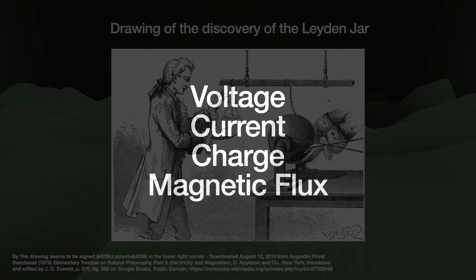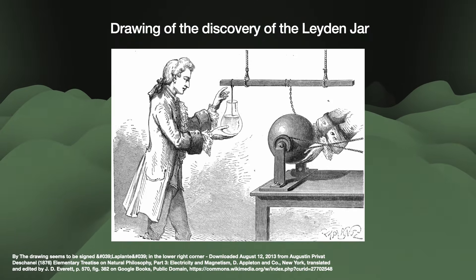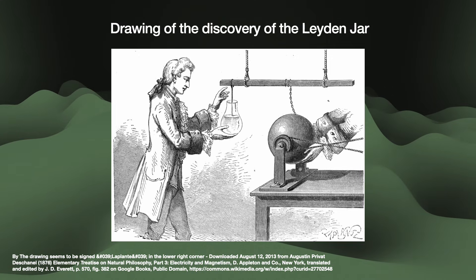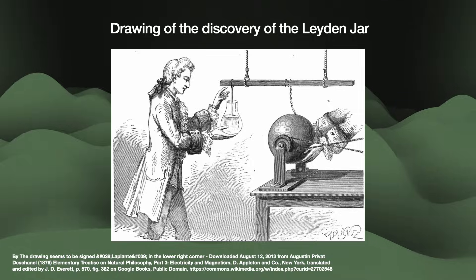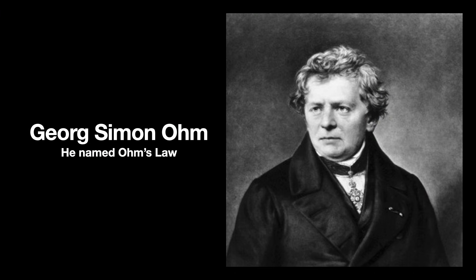The capacitor was first invented in 1745 when two scientists produced the Leyden jar. A capacitor stores and discharges electrical energy, thus it relates charge and voltage. The resistor can be said to have been invented in 1827 when George Simon Ohm laid out Ohm's Law, which relates voltage and current. The resistor limits or regulates the flow of electrical current in a circuit.